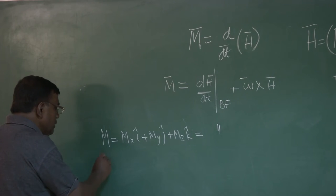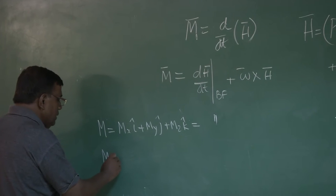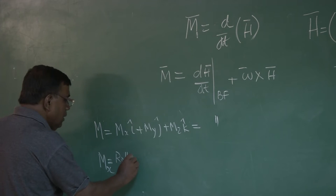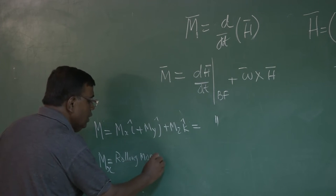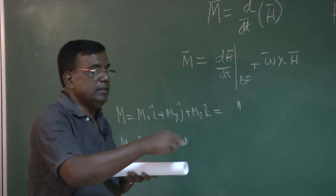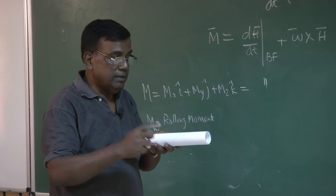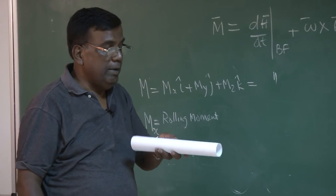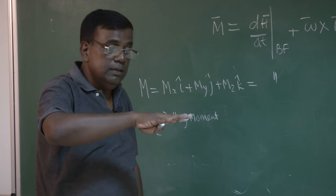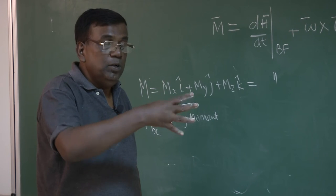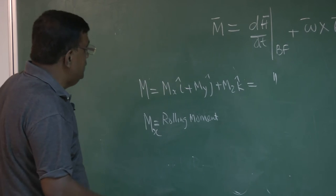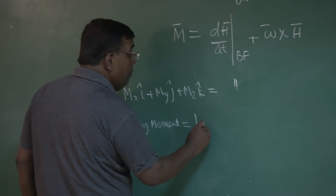For analytical use, Mx is called the rolling moment — that is, the moment about the aircraft x-axis. My convention is: if I fly with the machine and the right wing goes down, that is positive rolling moment. This is also denoted as L.